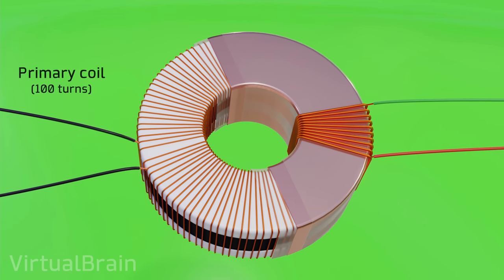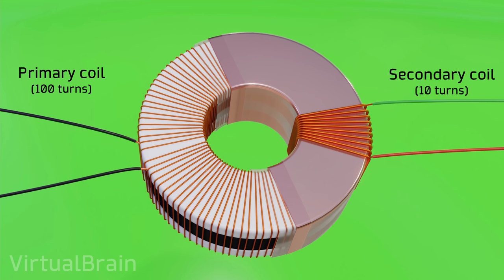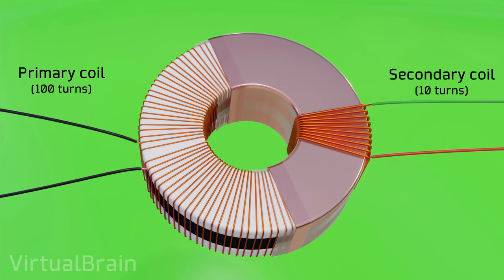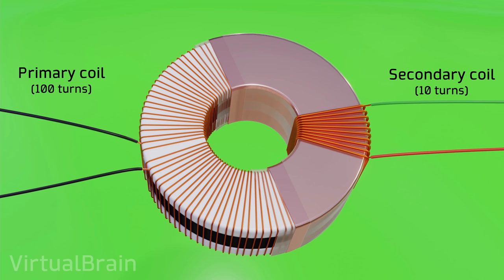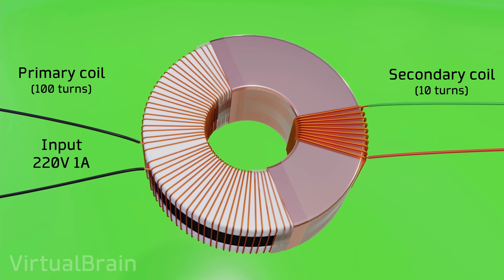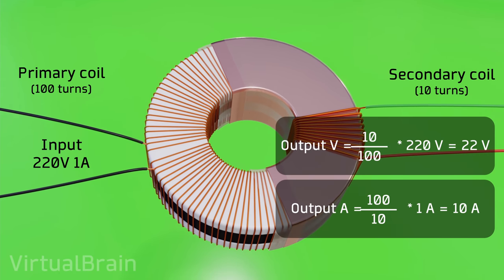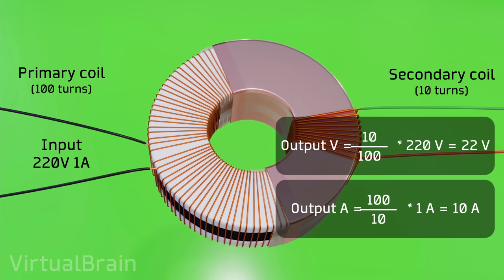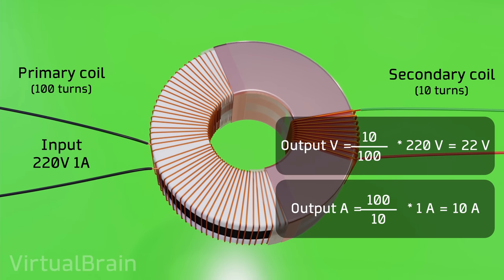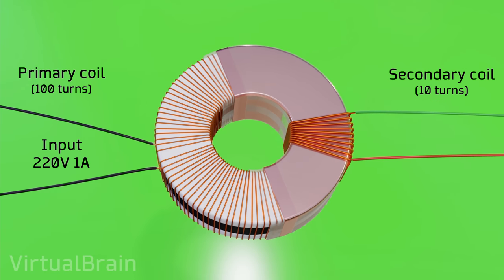Let's start assuming we have a primary winding with 100 turns and a secondary winding with 10 turns, that is, a ratio of 10 to 1. Only with this, if our input alternating current were 220 volts and 1 ampere, it means that the alternating current output would be 22 volts and 10 amps. Of course, assuming the transformation efficiency is 100%, which is not true, but why make things complicated?